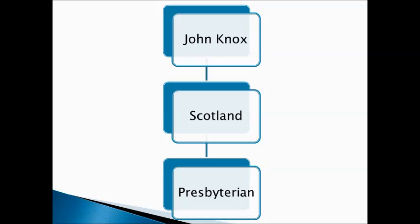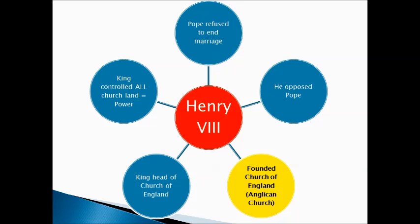John Knox brings the teachings of John Calvin and the ideas of Presbyterianism to Scotland. Our final Protestant leader is King Henry VIII. He wanted to divorce his first wife, but the Pope refused to end the marriage. Henry VIII opposed him, the Pope excommunicated him, so Henry VIII founded his own church — the Church of England, also known as the Anglican Church. King Henry VIII became the head of the Church of England, and at this time the king controlled all of the church land, which means Henry VIII got a lot of power.